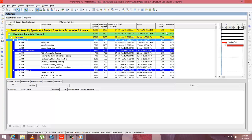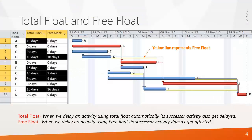Also check the total float and free float. Now let's see the difference between total float and free float. Here is an example for better understanding — a schedule containing 11 activities where some have total float and free float. Look at activity A, which has 10 days float and 0 days free float. When you delay activity A, automatically activity D also gets delayed. Similarly, when you delay activity C it will delay activity G. This is total float — when you use total float, its successor activity also gets delayed but project duration remains the same.